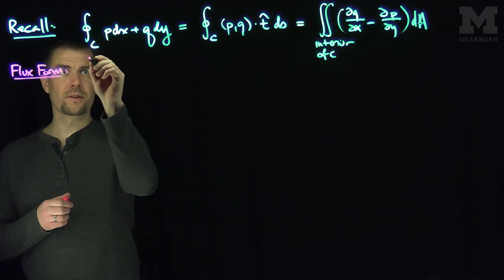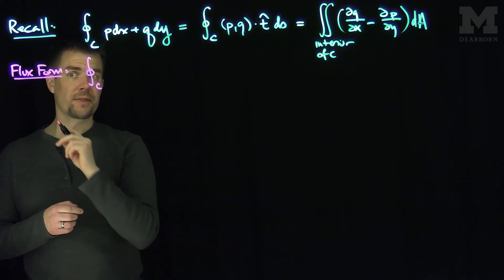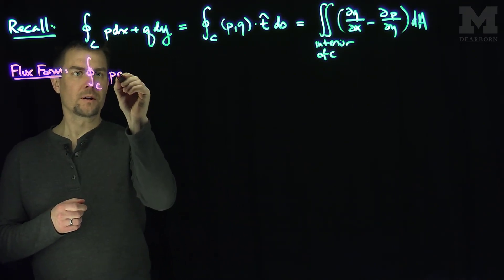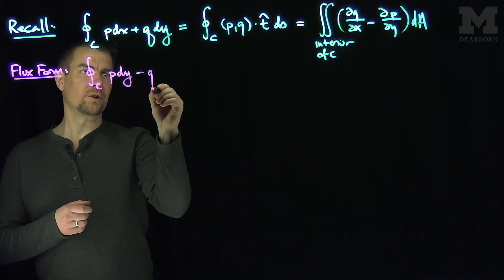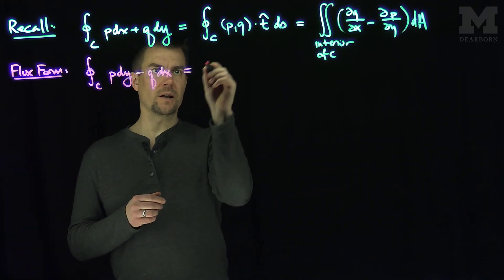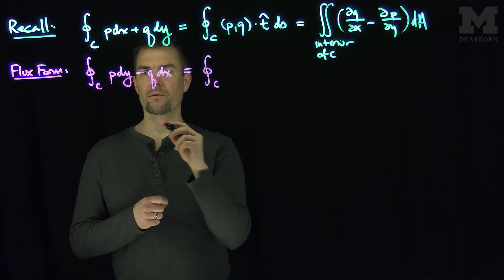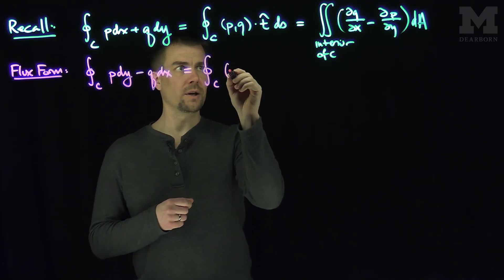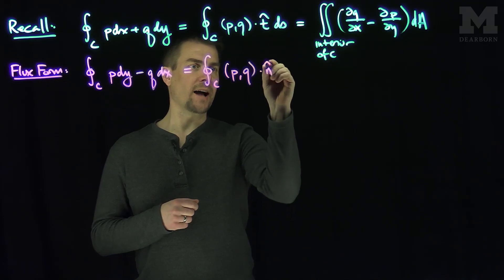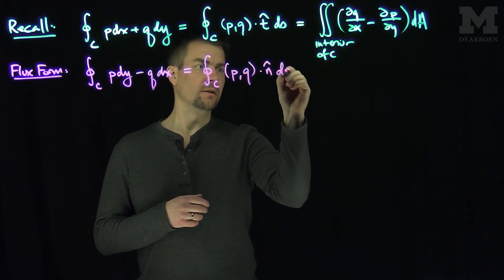The flux form says if I look at the integral over c, not the flow over c, but now what I'm gonna do is say p dy minus q dx. And what this will be is the flux over this curve of pq dot n hat, the normal vector, ds.